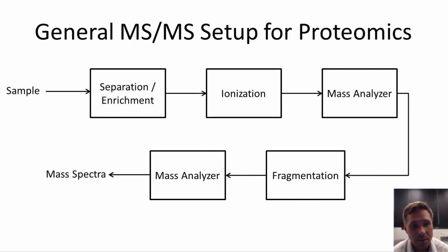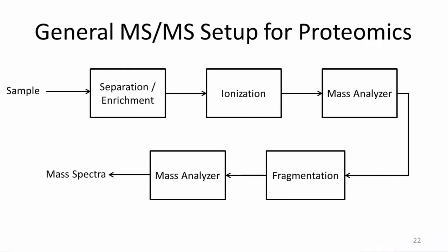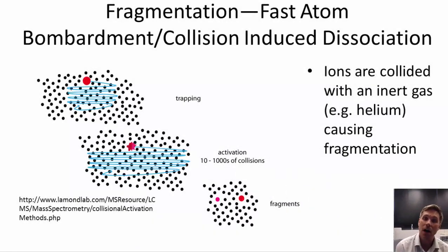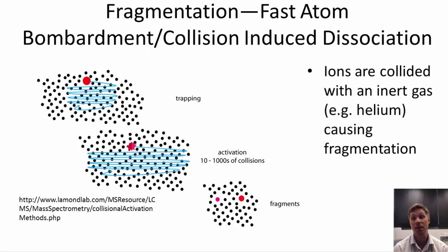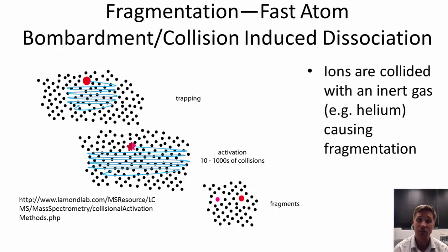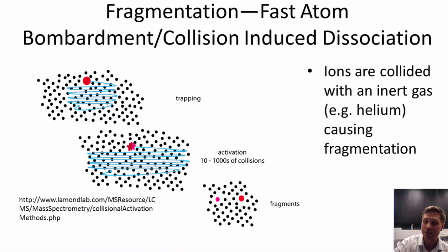Having covered separation, ionization, and mass analyzers, the next topic is how mass analyzers are coupled together through fragmentation in a tandem mass spectrometry setup. A very common fragmentation method is collision-induced dissociation, where ions in a chamber are bombarded with an inert gas such as helium, causing them to fragment randomly. This produces the fragmentation spectra introduced in the first lecture and serves as a common interface between two mass analyzers.